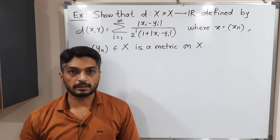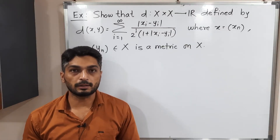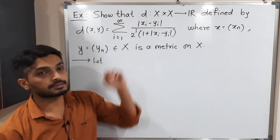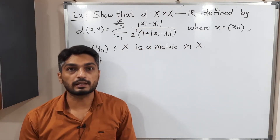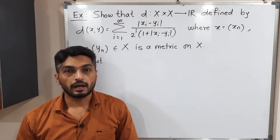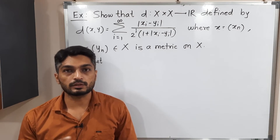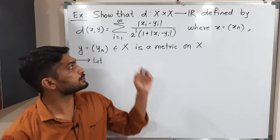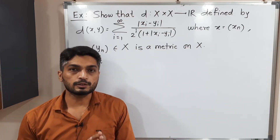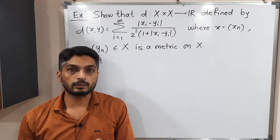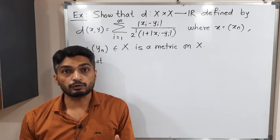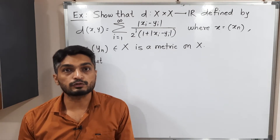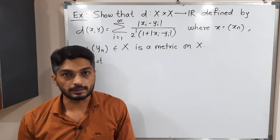Let us discuss this example. We have a set X, which is a set of sequences of real numbers. D is defined from X cross X to R in a specific way. First, we will try to understand what X is — what are its elements — and then we will think about D.